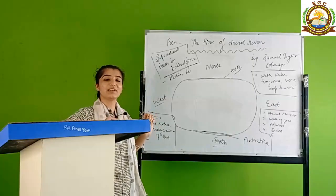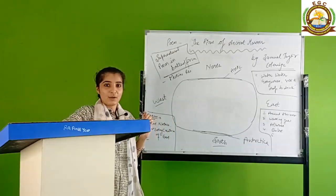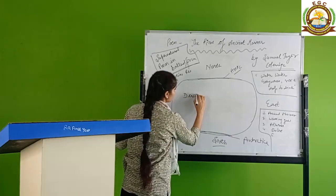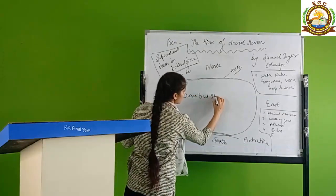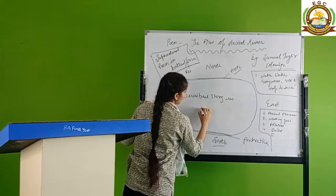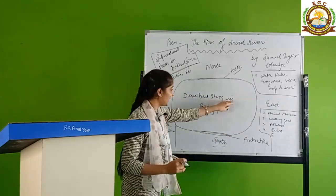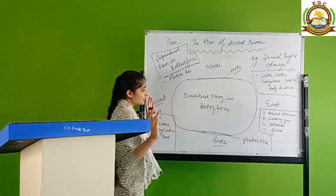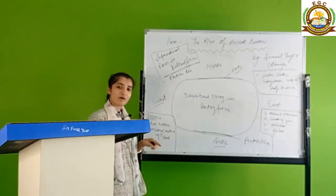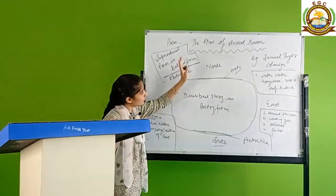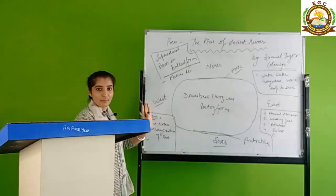You have studied literary terms, what is ballad? Ballad is a described story in poetry form. If a story is described in poetry form, it's called a ballad. So this poem is in ballad form.